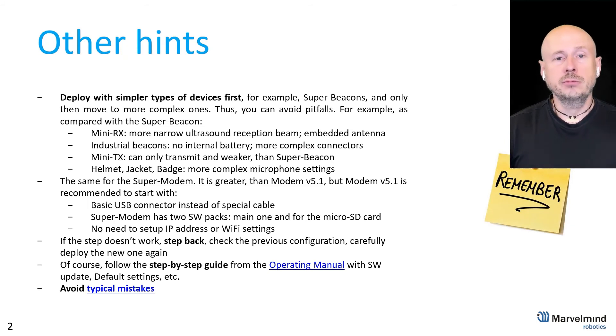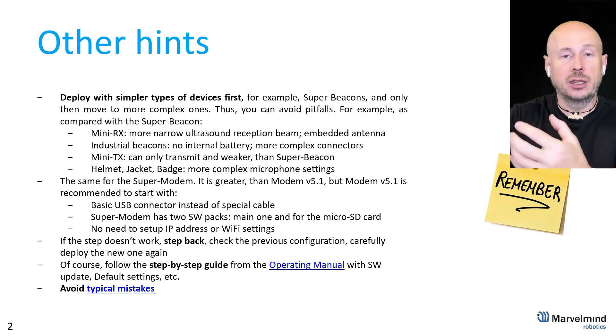The same with industrial beacons. So industrial beacons they don't have embedded battery so you need to provide the battery, you need to provide the electricity, it's easier to mix up something, confuse something. So this is why we do not recommend to jump immediately to industrial super beacons for example or industrial RX. Start with super beacons, achieve and then replace if needed. Like in the previous configuration you sometimes even achieve the perfect tracking in basic multiple sub maps and multiple hedges based on super beacons and only after that replace them with industrial beacons for example.